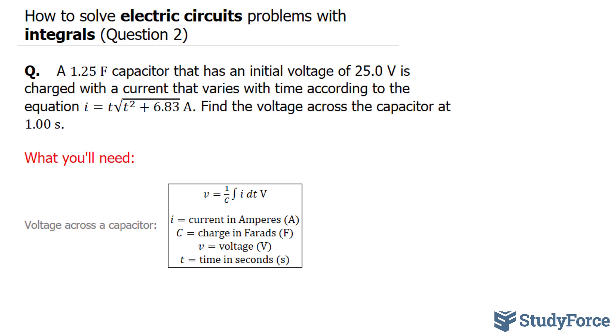Let's go ahead and do that. Let's substitute 1.25 into C, which is the charge in farads, where we get voltage is equal to 1 over 1.25 times the integral of this function, t times the square root of t squared plus 6.83 dt, and the units of this function are in amperes.